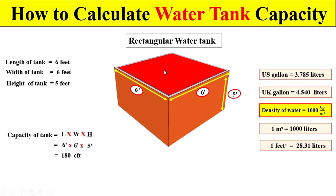Now dear students, if we are interested to calculate this water tank capacity in terms of US gallons, we multiply 180 cubic feet by 28.31 liters and then divide by 3.785 liters. From this we can get the total capacity of the water tank in terms of US gallons.